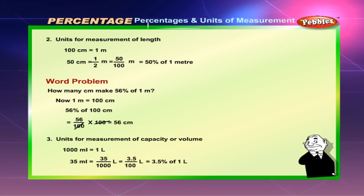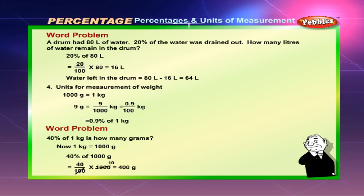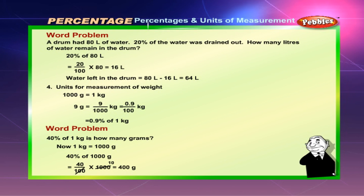Units for measurement of capacity or volume: 1000 millilitres = 1 litre. 35 millilitres = 35/1000 litres = 3.5/100 litres = 3.5% of 1 litre. Word problem: A drum had 80 litres of water. 20% of the water was drained out. How many litres remain? 20% of 80 = 20/100 × 80 = 16 litres. Water left = 80 − 16 = 64 litres.